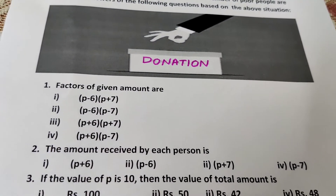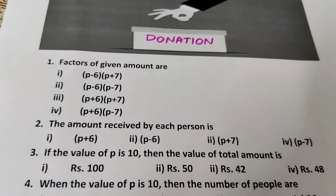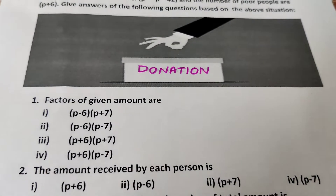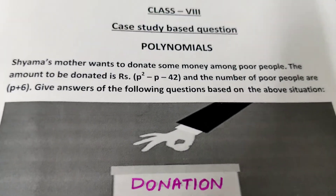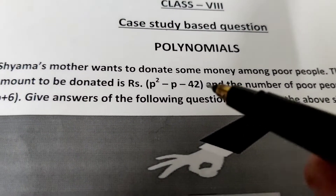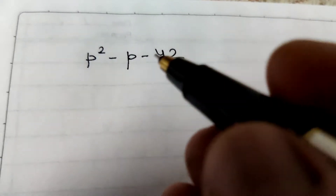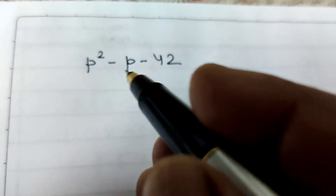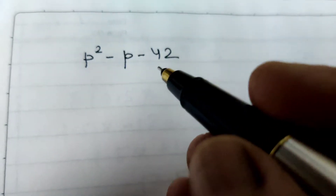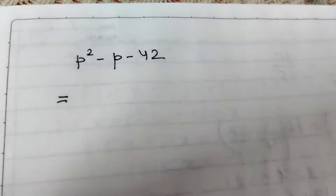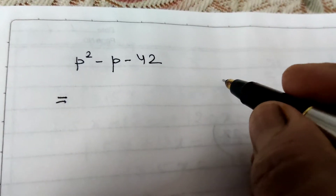Question 1: What are the factors of the given amount? The amount is p squared minus p minus 42. This is a quadratic polynomial. To find the factors, we factorize by splitting the middle term. We note that 42 equals 6 times 7, and the difference of 6 and 7 is 1.